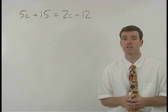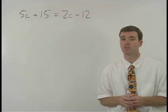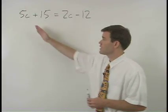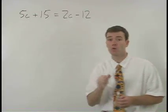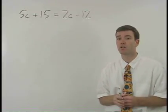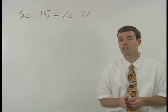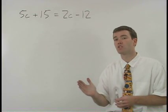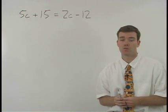Here our goal is basically the same as it was in the previous two examples. Since our variable, in this case c, appears on both sides of the equation, we want to put our c terms together on one side of the equation and put our numbers together on the other side of the equation.